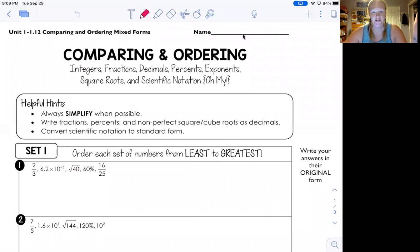Alright, welcome to Comparing and Ordering. So this whole unit we've dealt with integers, fractions, decimals, percents, exponents, square roots, and scientific notation. Oh my, I do agree with that statement actually. That's a lot. So now what we're going to do is look at a bunch of different numbers in all those forms and then put them in order.